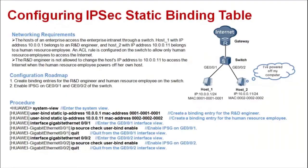Next, let's see an example for configuring a static binding table. As shown in the figure, Host 1 with IP address 10.0.0.1 belongs to an R&D engineer, and Host 2 with IP address 10.0.0.11 belongs to a human resource employee. An ACL rule is configured on the switch to allow only human resource employees to access the Internet. The R&D engineer is not allowed to change the host's IP address to 10.0.0.11 to access the Internet when the human resource employee powers off her own host.